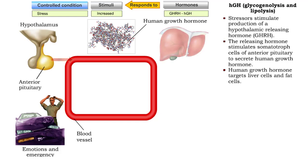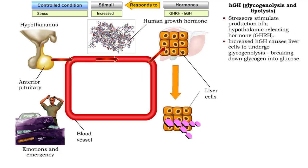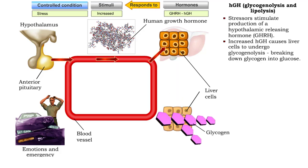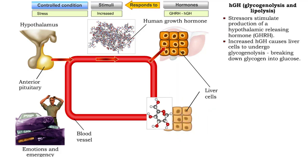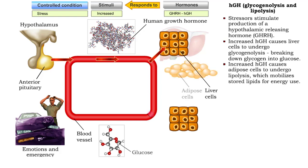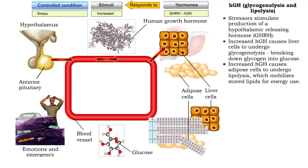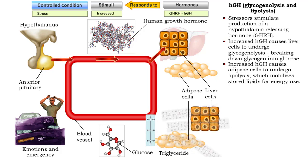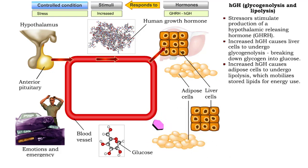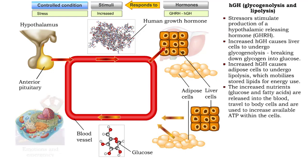HGH causes liver cells to undergo glycogenolysis, the process that breaks down glycogen into glucose. In addition, HGH causes adipose cells to undergo lipolysis, which mobilizes stored lipids for energy use. The increased nutrients are released into the blood, travel to body cells, and are used to increase available ATP within the target cells.